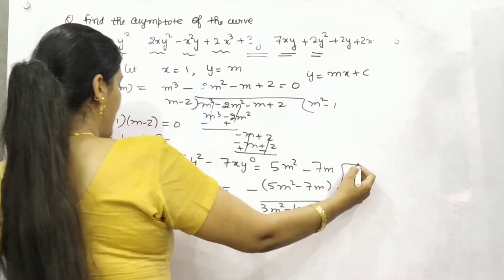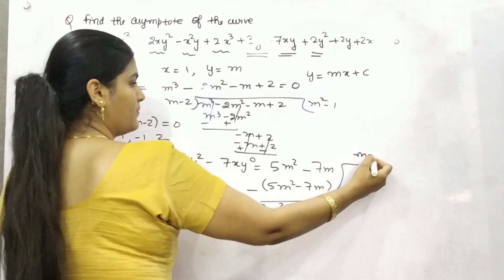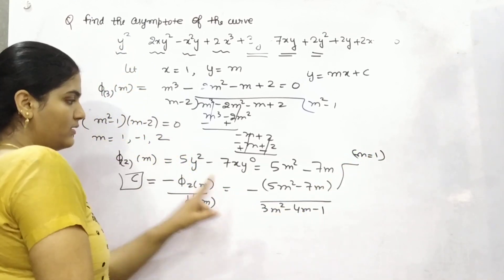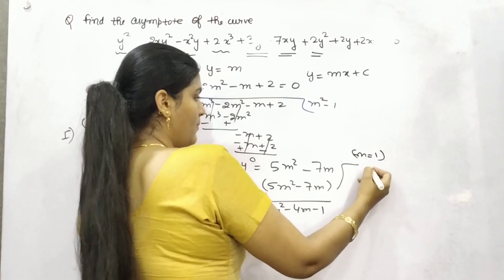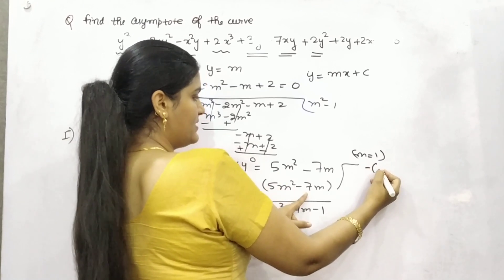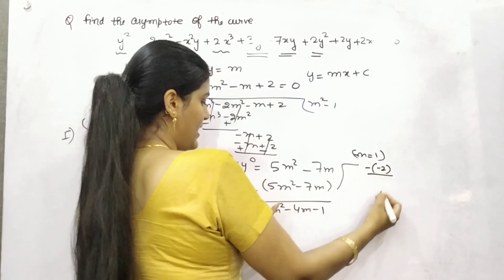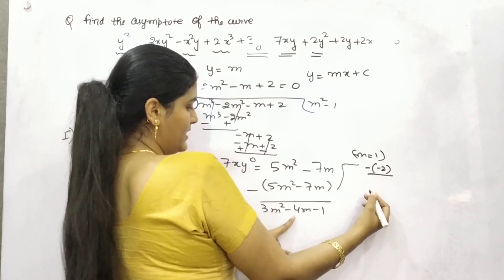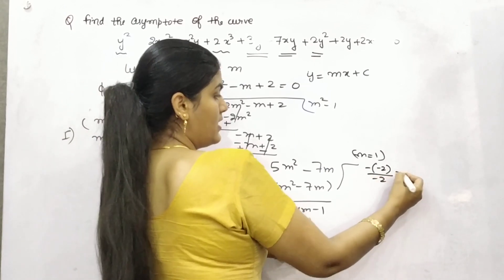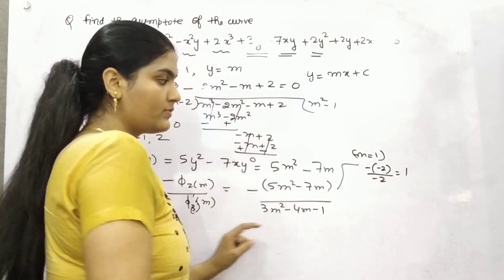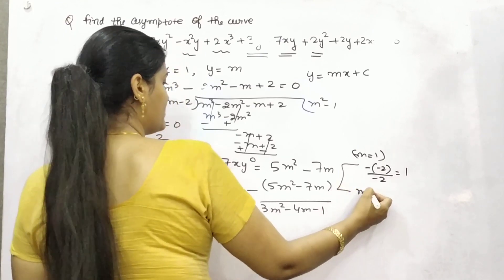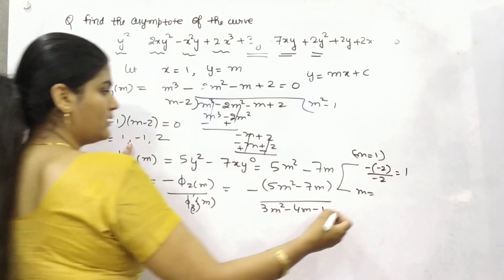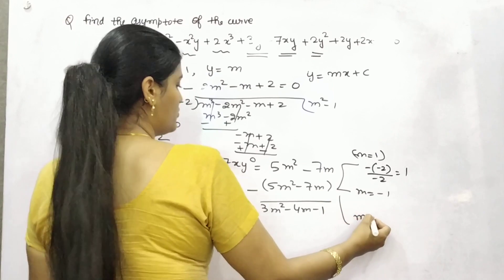So if your m is 1, what's the value? Minus 5 minus 7 minus 2 by 3 minus 4 minus 1 minus 2. So it will be 1.